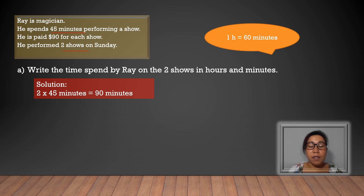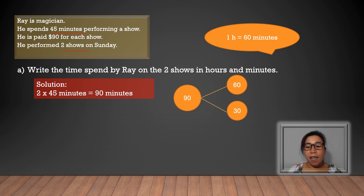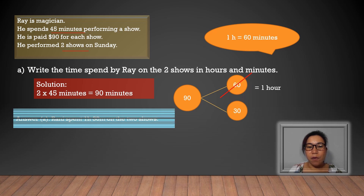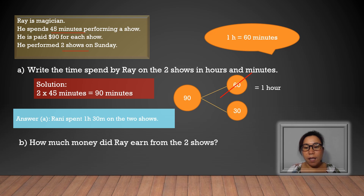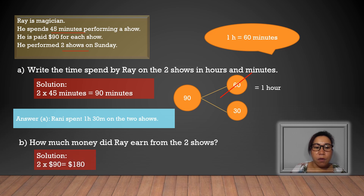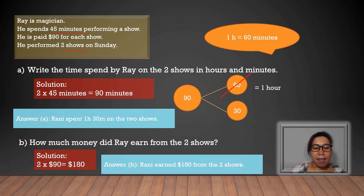Remember that 1 hour equals 60 minutes. So we can divide 90 minutes into 60 and 30. 60 minutes equals 1 hour. Answer: Ray spent 1 hour and 30 minutes on the 2 shows. To answer part B — how much money did Ray earn from the 2 shows — we simply multiply 2 by $90, because he is paid $90 for each show. 2 times 90 is 180. Ray earned $180 from the 2 shows.